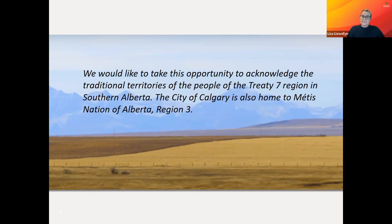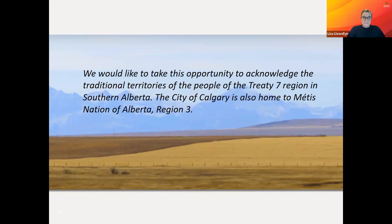which comprises the Siksika, the Kainai and Piikani First Nations, as well as the Tsuut'ina First Nations, and the Stoney Nakoda. Included in the Stoney Nakoda are the Chiniki, Bears Paw and Wesley First Nations. The city of Calgary is also home to Métis Nation, Alberta Region 3. In Blackfoot, the city of Calgary has the name Mohkinstsis.